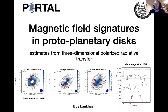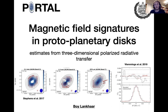So other probes of the magnetic field morphology have to be used in order to trace the magnetic field structure of protoplanetary disks. In this talk, I will discuss one observational avenue that might accomplish this, namely through the observation of linearly polarized molecular lines.